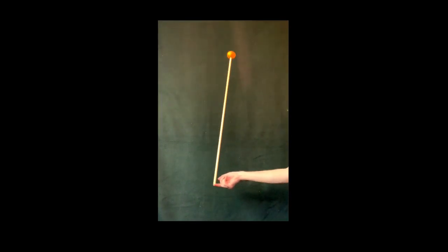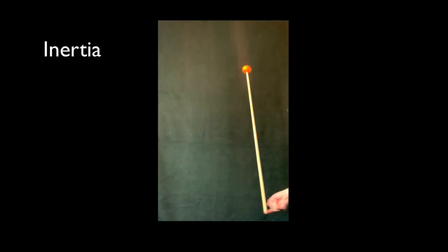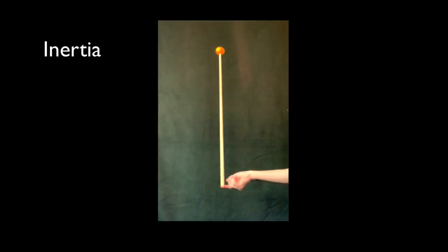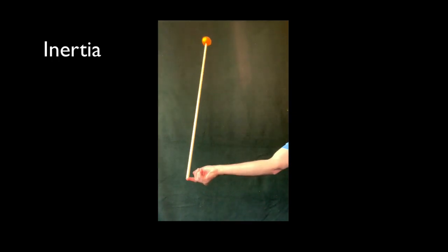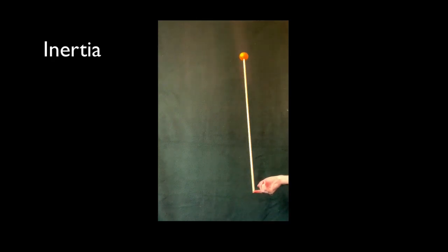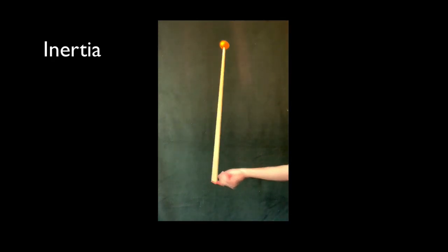The more mass you have, the more inertia you have. Inertia, recall, is the tendency of something to not change what it's doing. So the orange has all this inertia. That means a greater tendency to stay where it is.